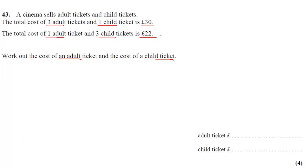equations to solve this. So we're going to form and solve. We're going to say an adult ticket is A, a child ticket is C. So 3 adult tickets, that's 3A, 1 child ticket, that's 1C. And means they add up to £30. So I can form this equation: 3A plus 1C equals £30.